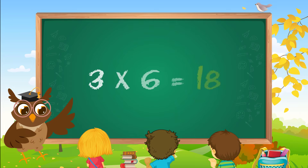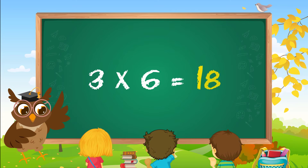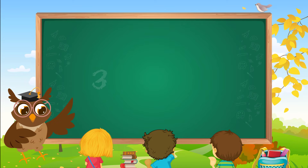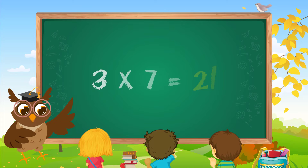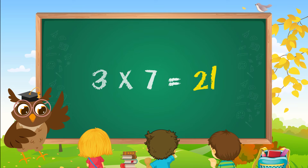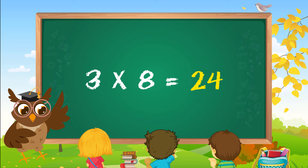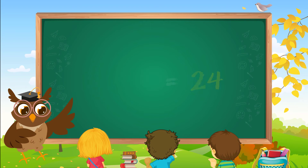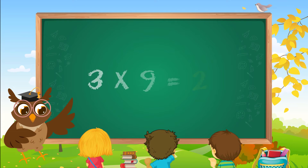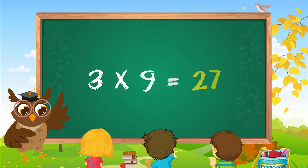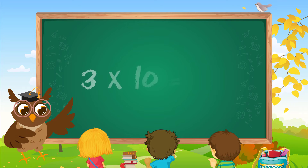Three sixes are eighteen. Three sevens are twenty-one. Three eights are twenty-four. Three nines are twenty-seven. Three tens are thirty.